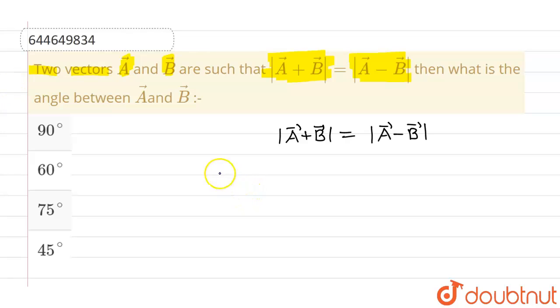Now again, we know that A vector plus B vector is nothing but A square plus B square. This is magnitude of A vector plus B vector, which is A square plus B square plus 2AB cos theta.